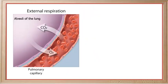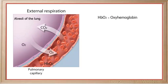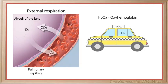Oxygen diffuses across the walls of the alveoli and capillaries into the bloodstream, where oxygen binds with hemoglobin to form oxyhemoglobin. Think of the hemoglobin molecule as the taxi that picks up various passengers in the bloodstream and delivers its passengers to where they are needed.